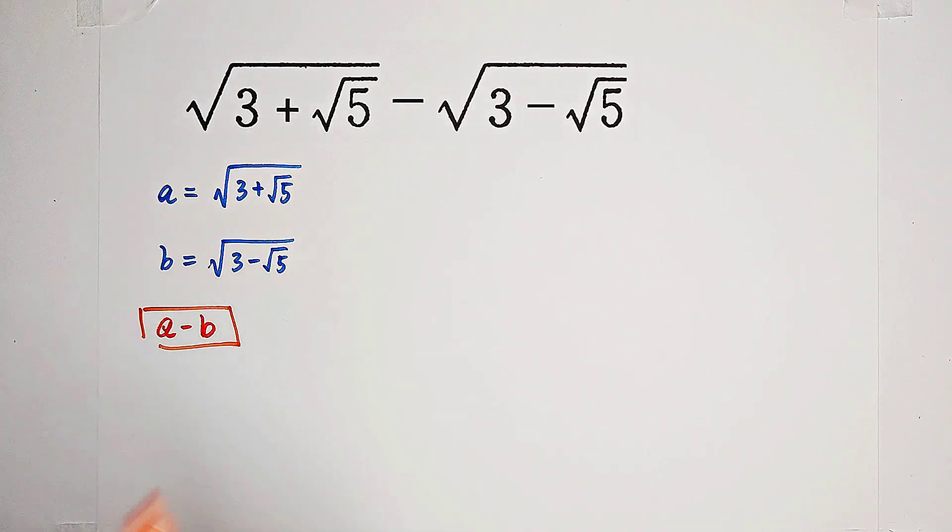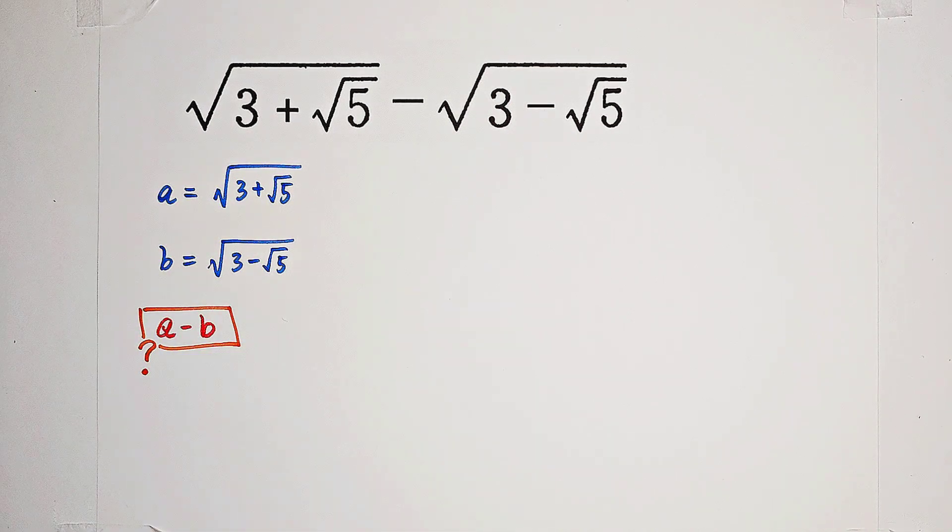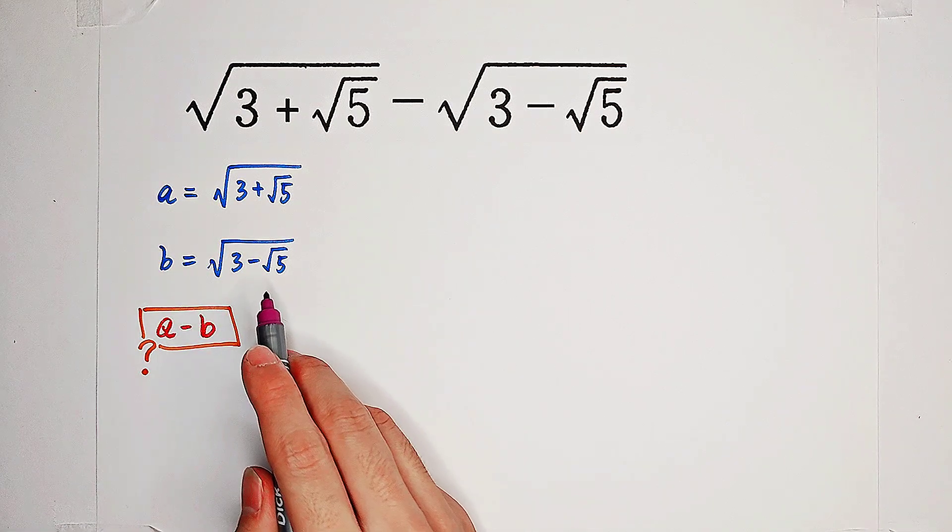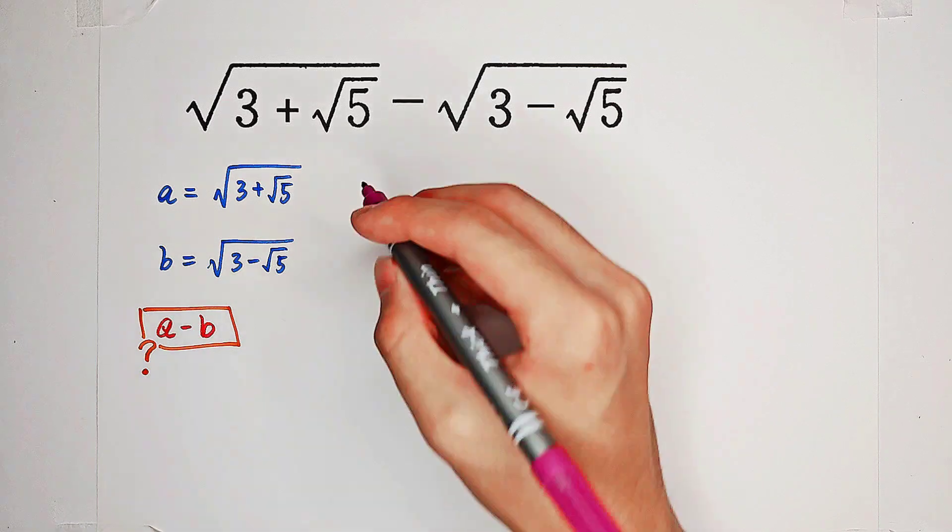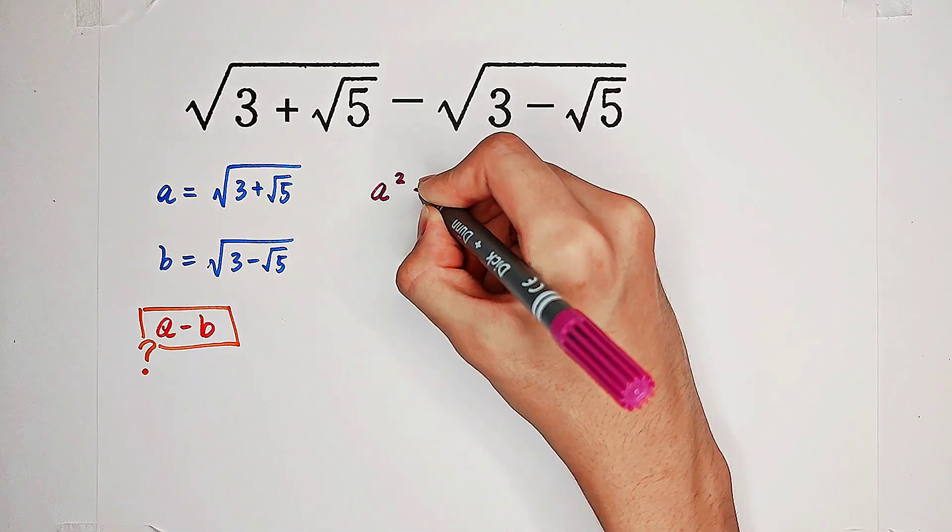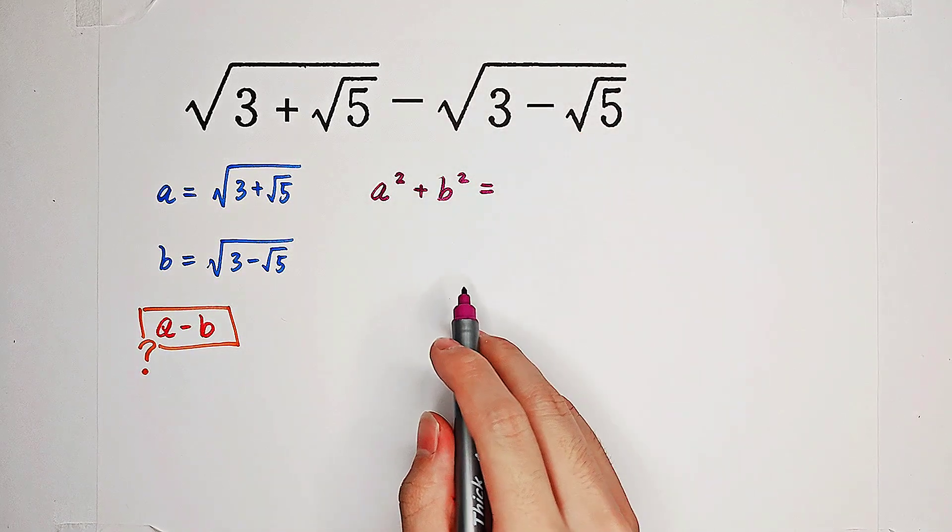So now, how can we solve for a minus b? What I'm going to tell you is a and b have loads of relationships, wonderful relationships. Now consider a squared plus b squared. It's a very good hint.